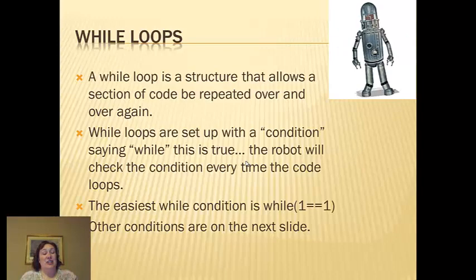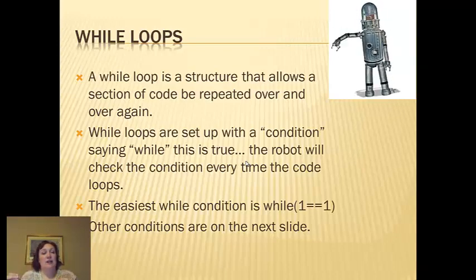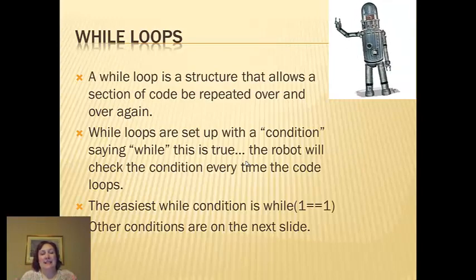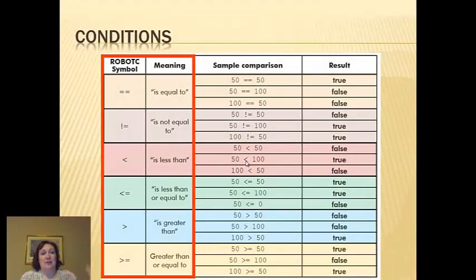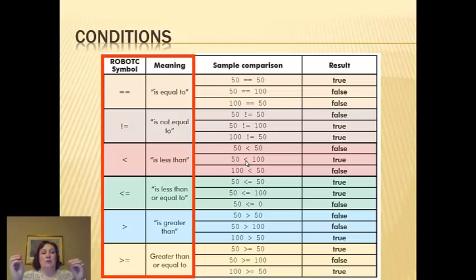You use a condition to set up a while loop. It says: while this is true, then keep reading this code. The easiest condition to use is 1 == 1. There are other conditions you can use — for example, == is robot C speak for 'equal to,' and != means 'not equal to.' So 1 != 2 would also run something forever.